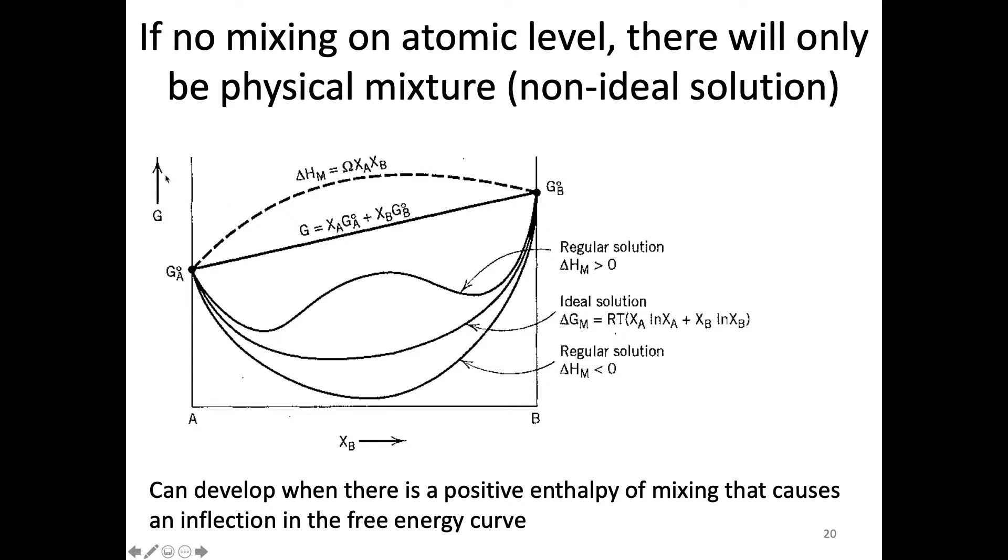What I put up here is a Gibbs free energy plot versus composition. Imagine we have two things and we can plot the Gibbs free energy of putting those two things together. This non-ideal solution can happen, this physical mixing instead of atomic, when there is a positive enthalpy of mixing. If I try to add two things together, it takes additional energy to mix, so that's when these things can happen.